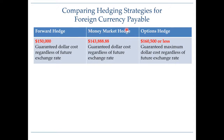The cost with money market hedge is $143,888, regardless of future exchange rate. With options hedge, at most it's going to cost us $160,500, but it could be less depending on the future spot rate. We may choose not to exercise our call options and instead go directly to the spot market and buy pounds if the future spot rate happens to be less than $1.50.